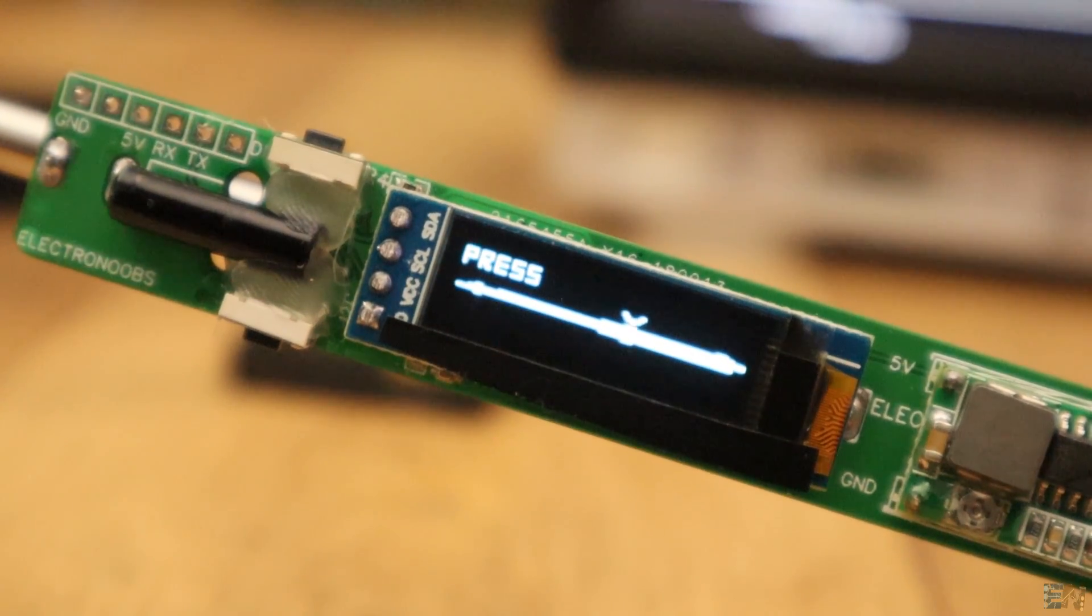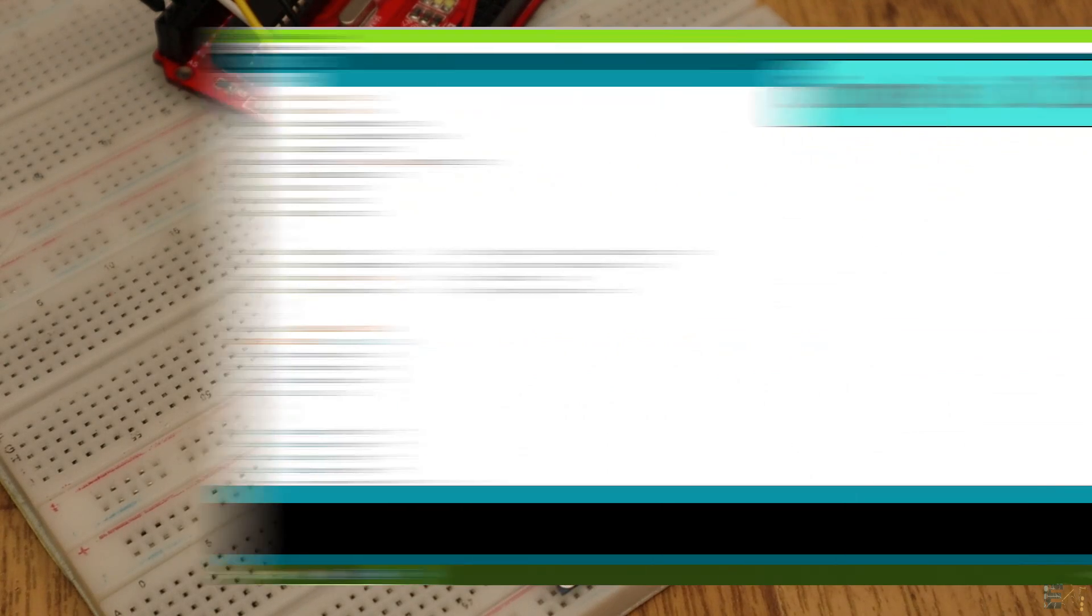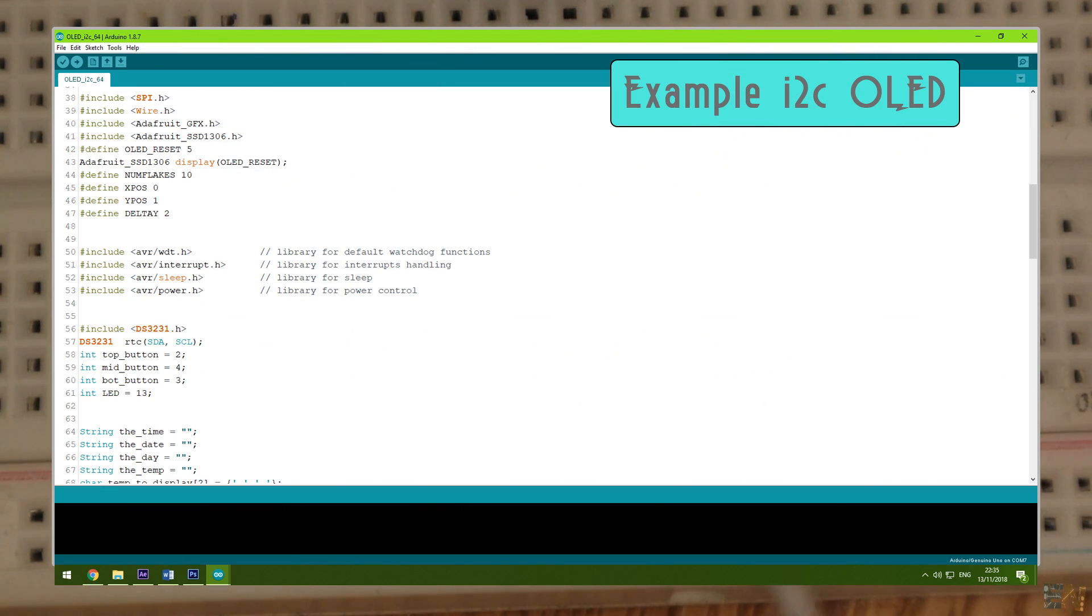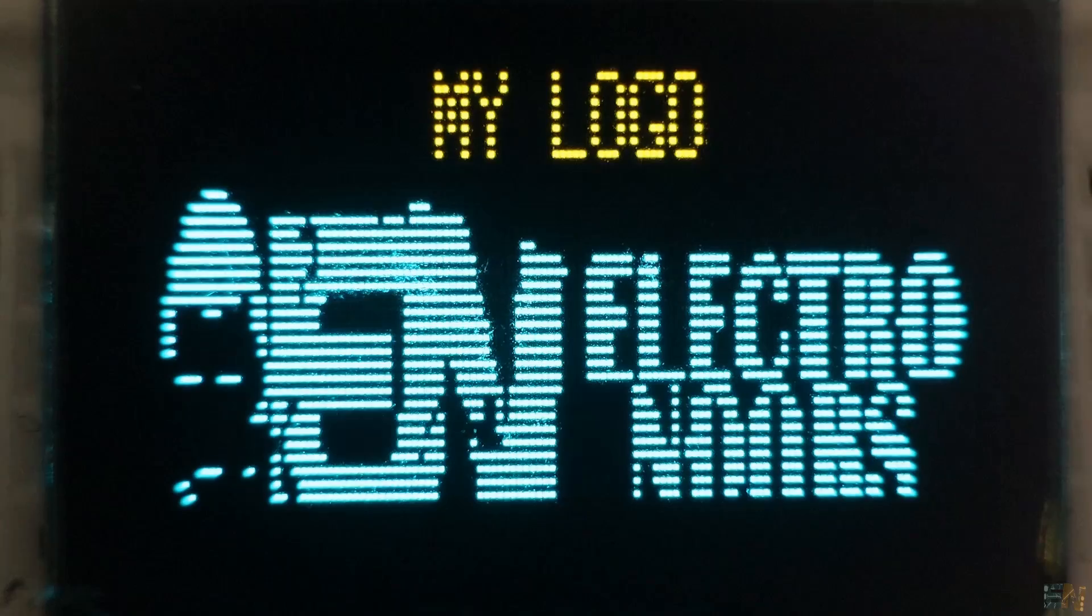This display is one of my favourites since it is very cheap and easy to use. So, upload this code that will show you how to print text, numbers and create your own logos with a size of 128x64 or 32 pixels.